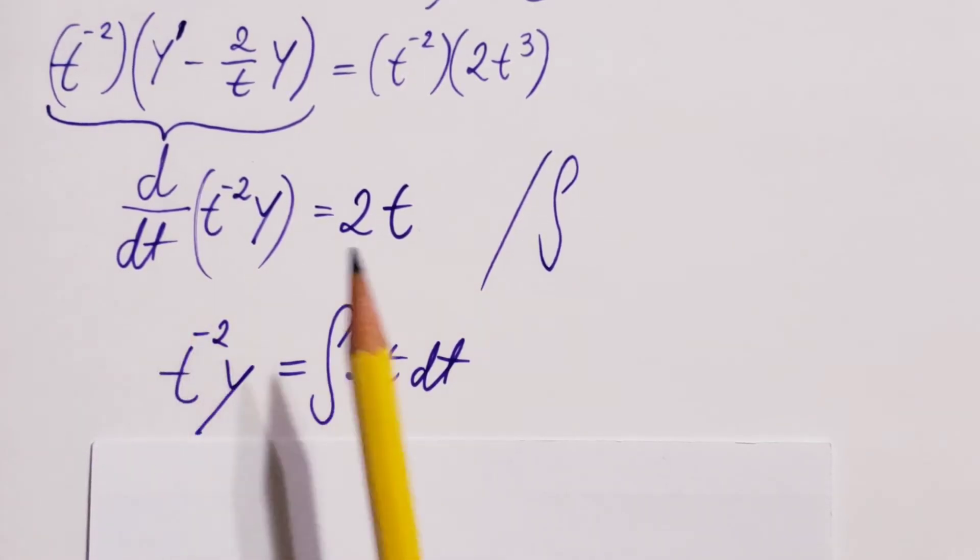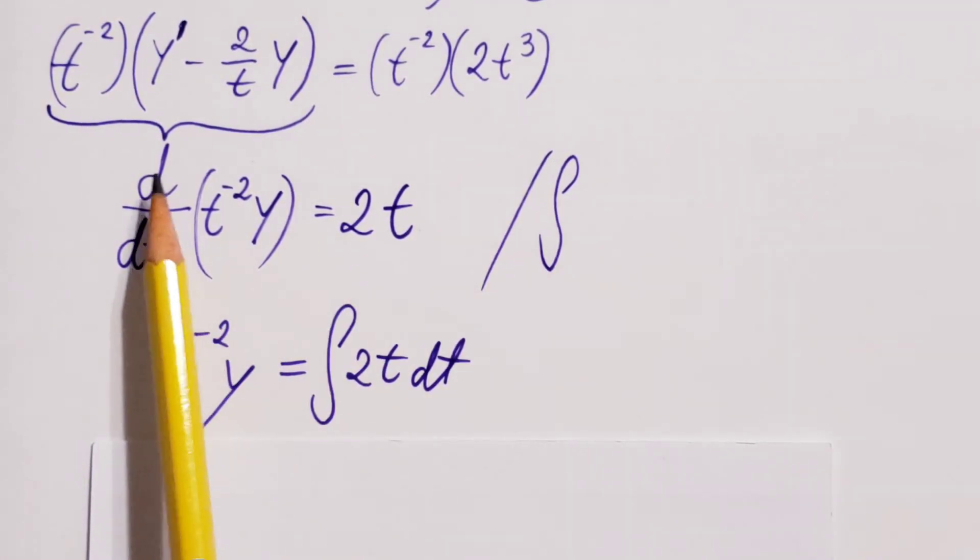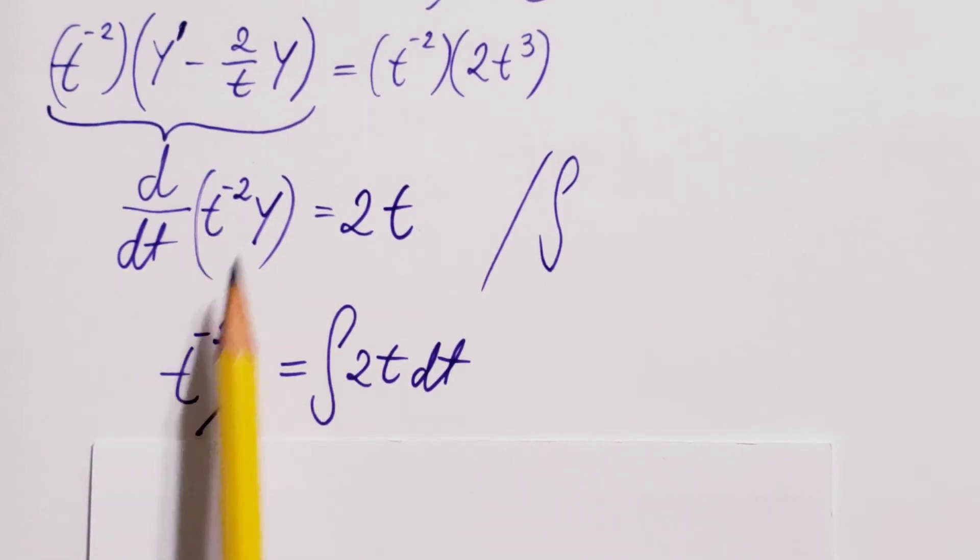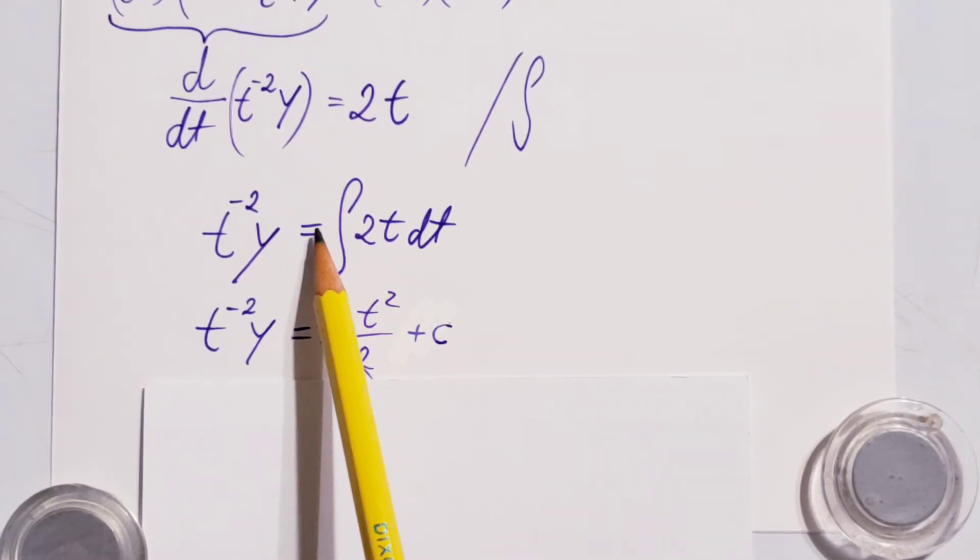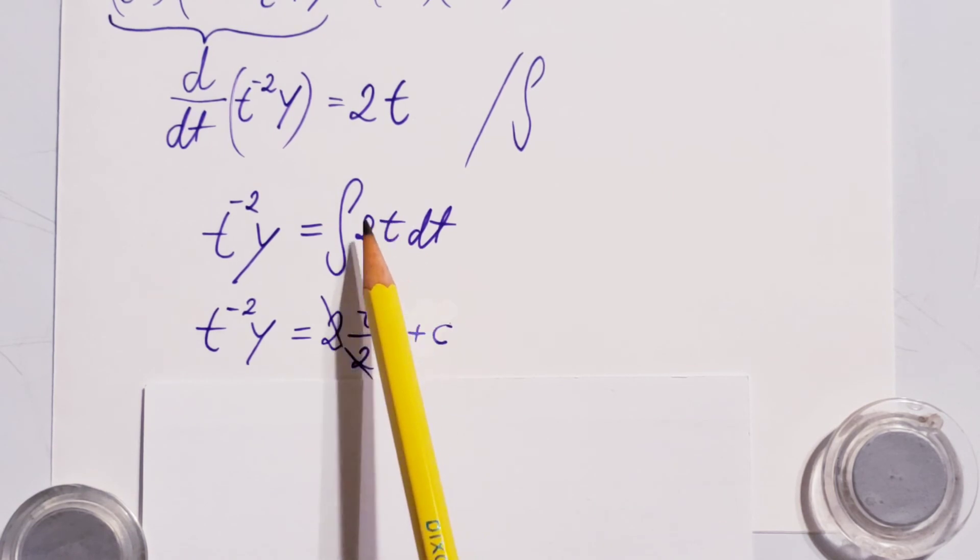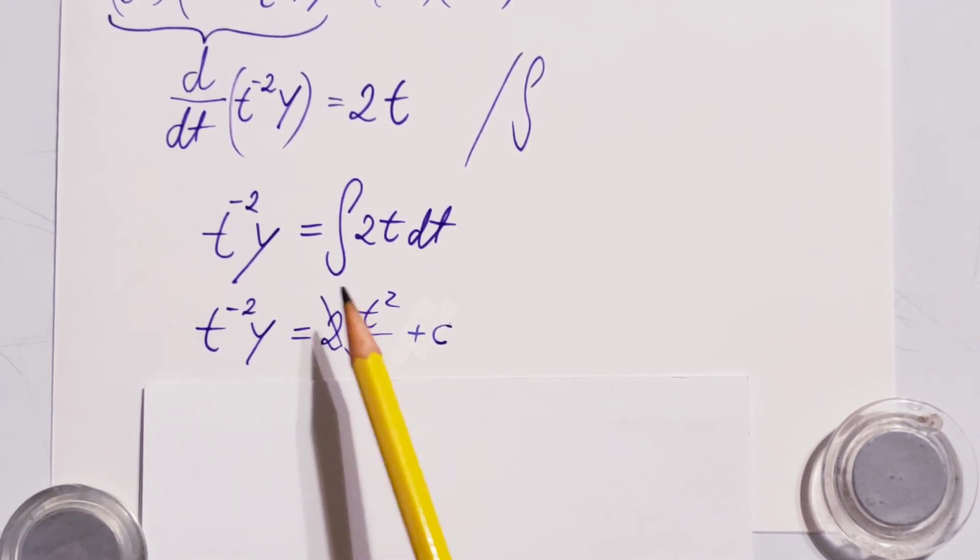On the left-hand side, we have integral of a derivative which cancel each other. So all we have left is simply what we have in the parentheses, t to the negative 2 times y. And here, we're going to have integral of 2t dt. Solve the integral. The 2 jumps out in front. The integral of t dt is t to the square divided by 2, right? Then these two twos cancel each other. Don't forget the little c.